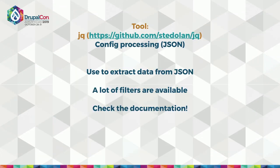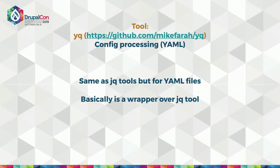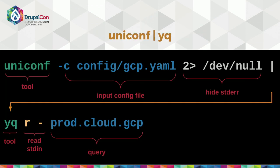The next tool is jq — does anybody know jq? Great, because it's a very important tool. If you work with JSON or YAML files, you really need to use it — otherwise you're wasting your time. The documentation is very good with lots of scenarios. It's definitely one of the main tools in the DevOps world. The other one is yq, which is the same as jq but for YAML files — it's basically just a wrapper over jq.